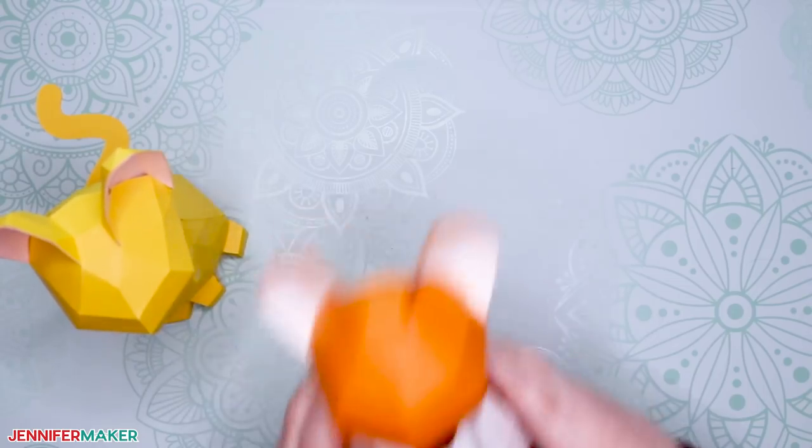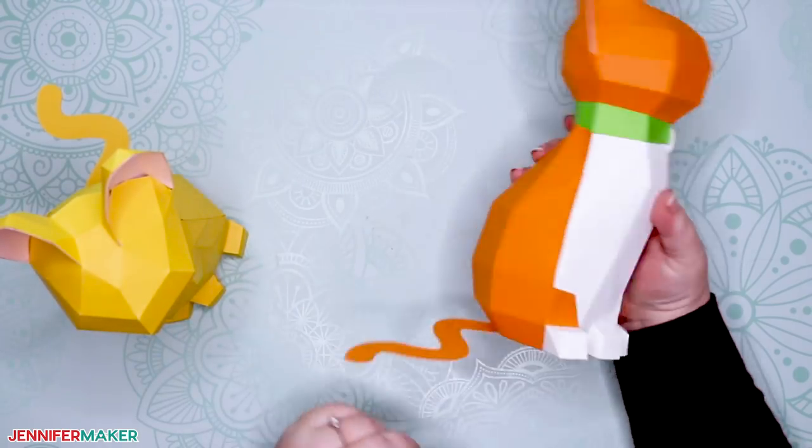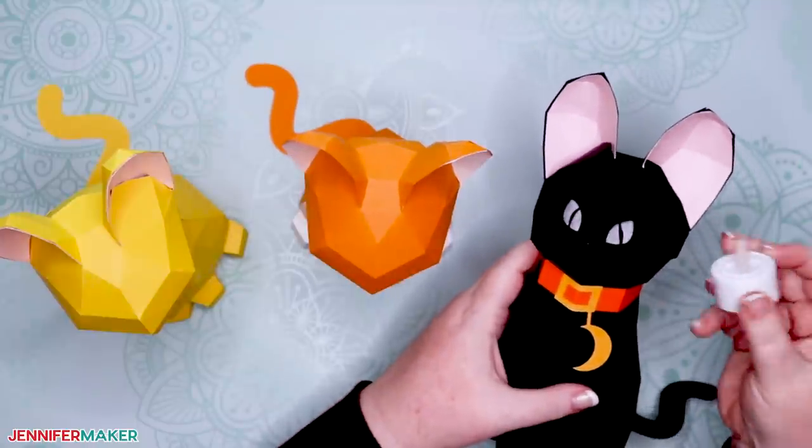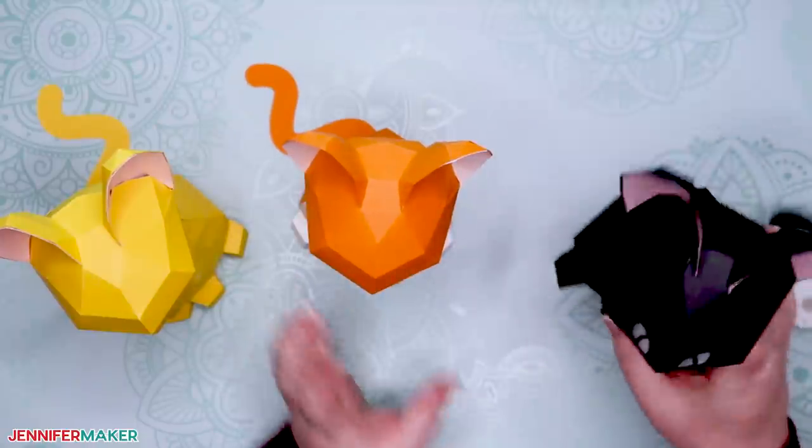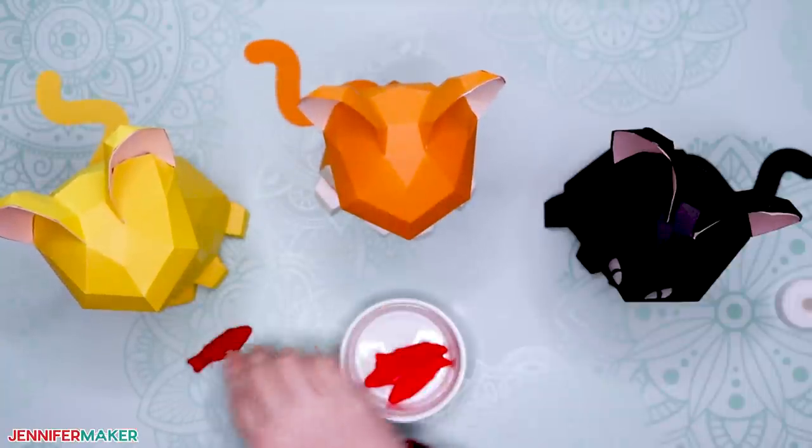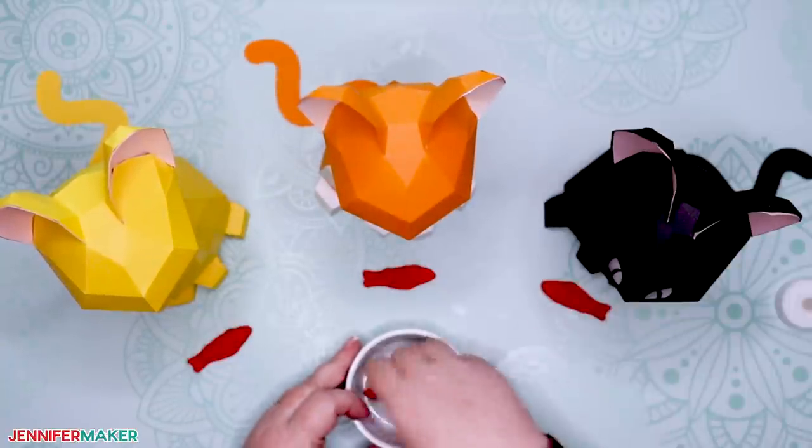You can also make a tuxedo cat like this ginger and white one here. Or how about a black cat for Halloween? This one has cut out eyes so you can light them up with an LED tea light. And that's it. Great work. Everyone has earned a little fishy.